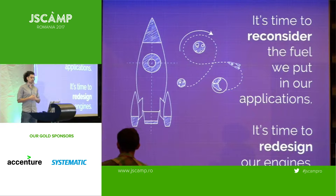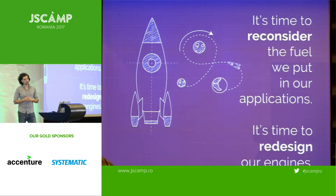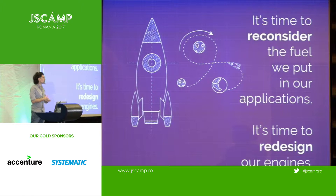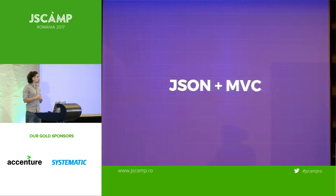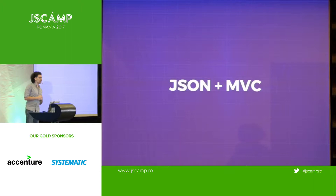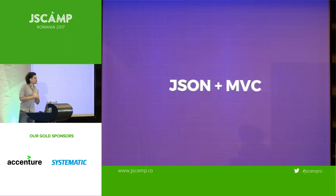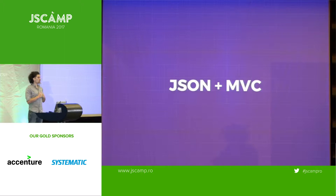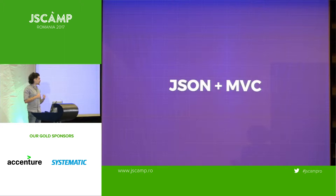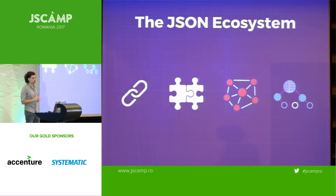Data is much more robust and can simplify the way we build applications. Through this talk, I would like to challenge the status quo. I think it's time to reconsider the fuel we put in our applications and redesign our engines. The solution I'm proposing — the new type of engine — is called JSON-MVC. I don't know how many of you know of the JSON ecosystem, which is actually the most robust, versatile and efficient data management system ever produced in the computer world.